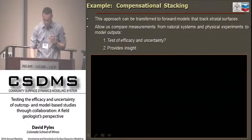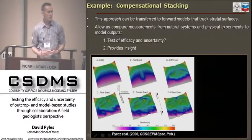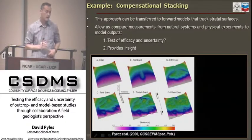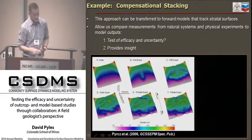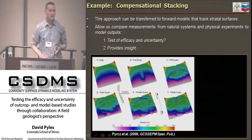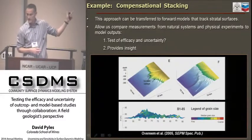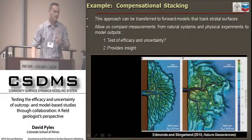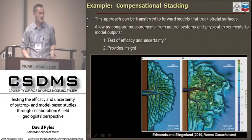Because this is a surface approach, it could be applied to any forward stratigraphic model. Shown here is an output from Michael Perch's paper in 2006. Michael Perch has been focused on event-based or rules-based models. The important thing about this type of modeling is that he can track stratigraphic surfaces in the same way that 3D SedFlux does as well—shown here from Irena's article in 2005. This would also work for what Doug Edmonds and his colleagues are doing. If we can use surfaces and the thicknesses between surfaces, we might be able to measure model outputs against natural systems.